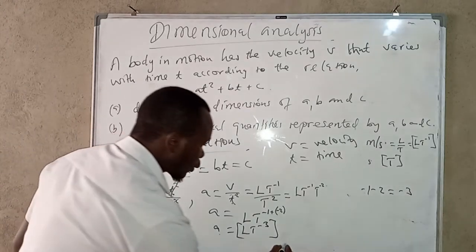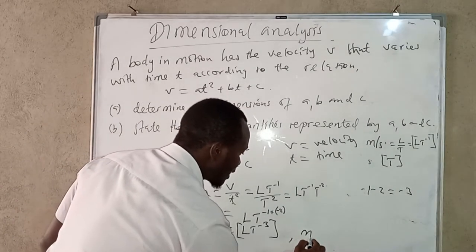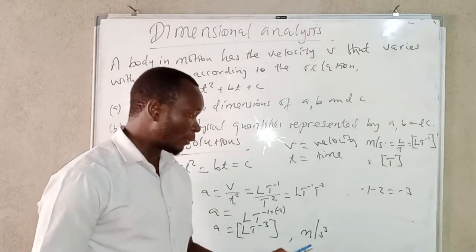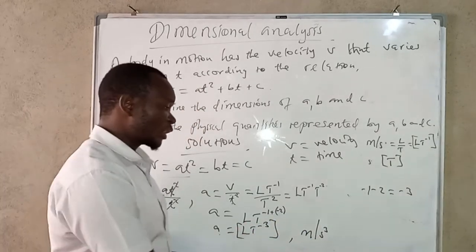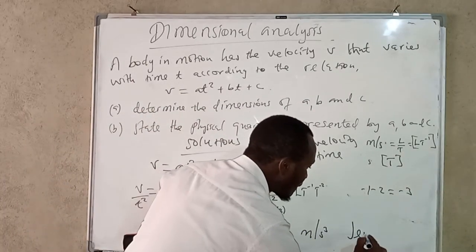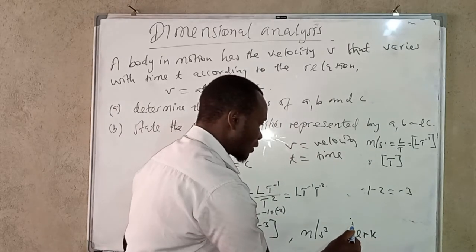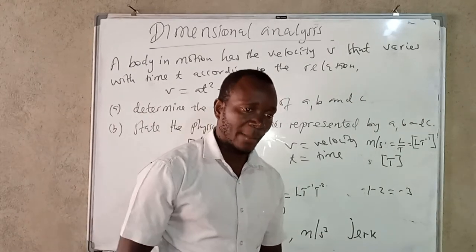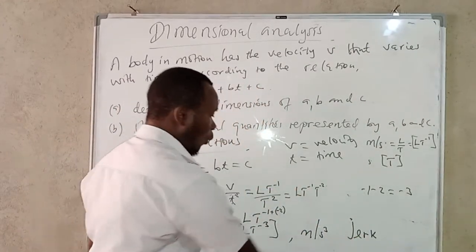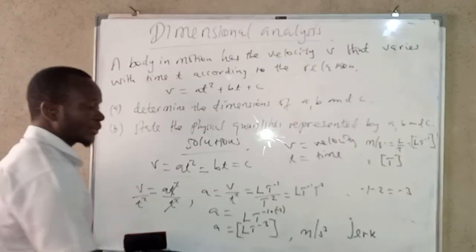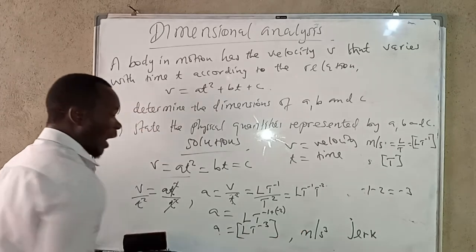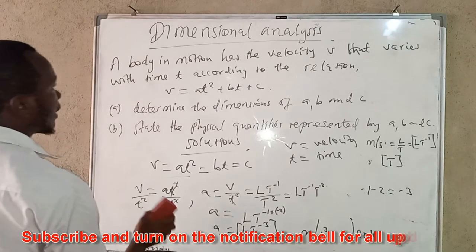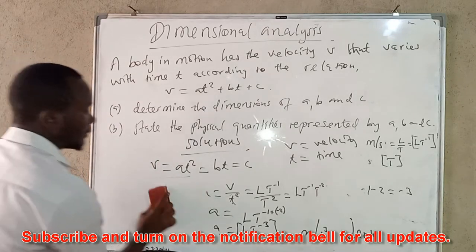In units, a is meters per second cubed. This is the rate of change of acceleration, which is called jerk — the rate at which acceleration changes, or a sudden change in acceleration. So a represents jerk.